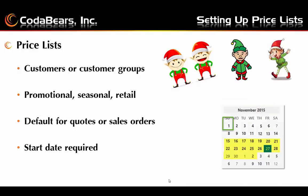Like price groups, price lists can also be set up in Quote Management or Order Management in the setup submenus. Price lists are set up in addition to price groups to apply more finite pricing — for example, for customers or customer groups such as the red dressed elves or the green dressed elves, or a group of all elves. You can also have promotional or seasonal pricing, such as if the elves place their orders by November 1st, or additional pricing if orders are placed between November 15th to December 2nd.